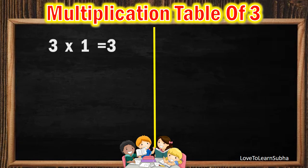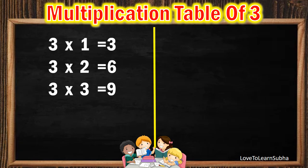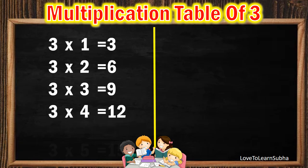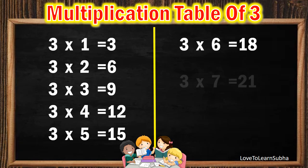3 1s are 3, 3 2s are 6, 3 3s are 9, 3 4s are 12, 3 5s are 15, 3 6s are 18, 3 7s are 21.